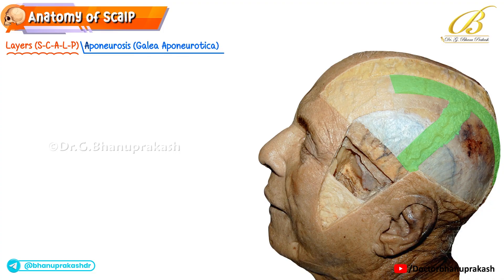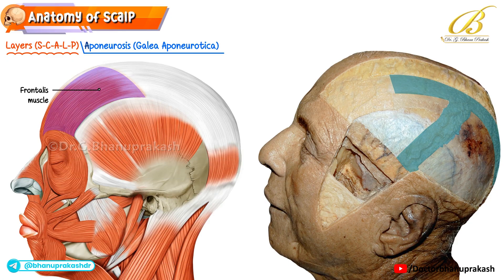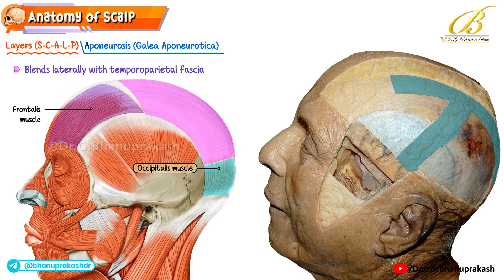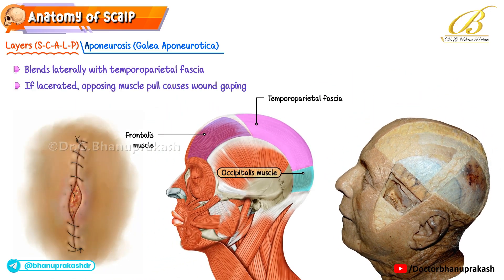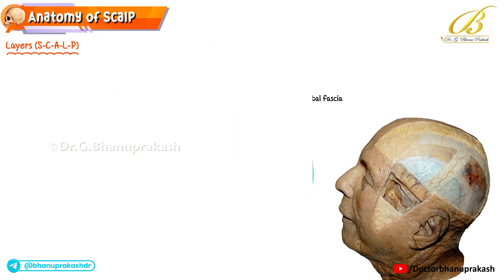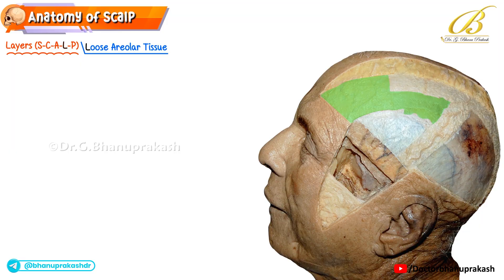The third layer is the aponeurosis, also called the galea aponeurotica. This broad tendinous sheet stretches across the skull, connecting the frontalis muscle in front to the occipitalis at the back, and blends laterally with the temporoparietal fascia. If this layer is lacerated, the opposing pull of these muscles causes the wound edges to gape widely.